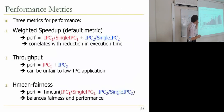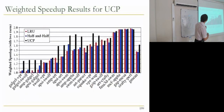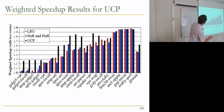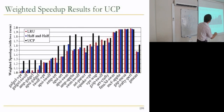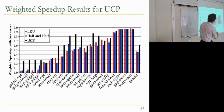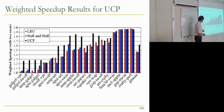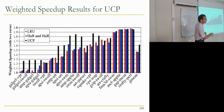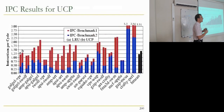Looking at performance results in a two-core system: this compares the LRU policy, dynamic shared cache partitioning, free-for-all with LRU, and half-and-half (private caches where the cache is split in two). Sometimes shared caching is better, sometimes private caching is better, depending on the workload mix. But with utility-based cache partitioning, you significantly improve performance because you're giving more cache to the application that benefits more from it.